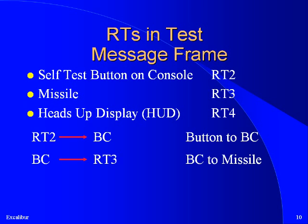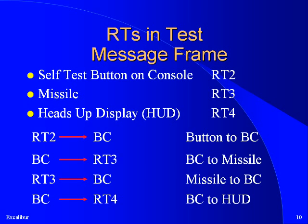If the data word is 1, the missile will perform a self-test. Later, after the missile has had enough time to perform the self-test, the BC will send it an RT-to-BC message to get the results of the test. Finally, the BC will send a message to the display with the data returned by the missile's RT. One could design the system so that if the RT2 button is not pushed, none of the other messages are sent. This sounds reasonable but may violate the real-time characteristics of the system. The system must be fast enough to function in a worst-case scenario.